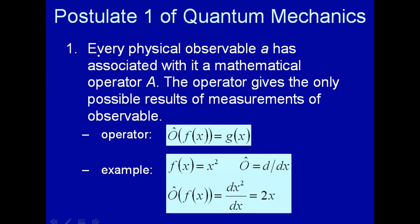The first postulate: every physical observable A has associated with it a mathematical operator A — usually we'll put a little hat above the A. That's a little hard to grasp at this stage, but let's just take it on faith. The operator gives the only possible results of the measurement of the observable. Remember we talked about quantization — quantization means you can't have any old energy, for example; you can only have certain energies. These operators will give only those possible results of the measurement. Any measurement not given by this operator cannot be measured experimentally.